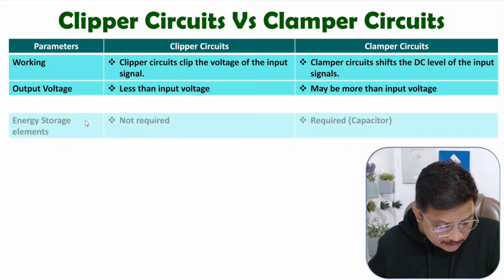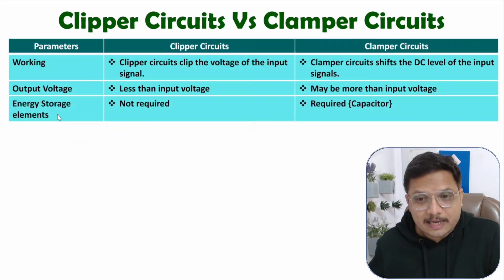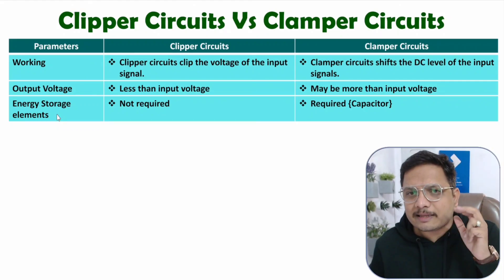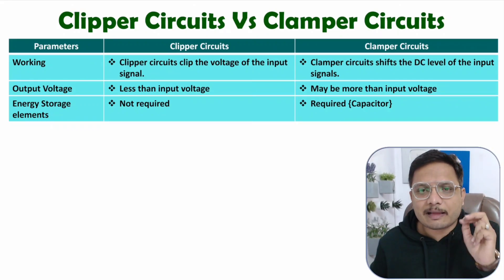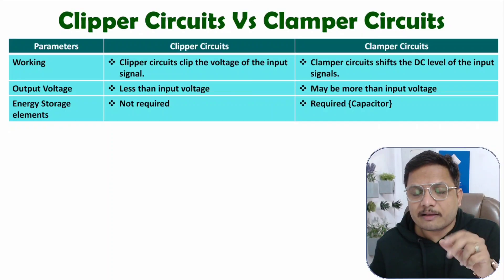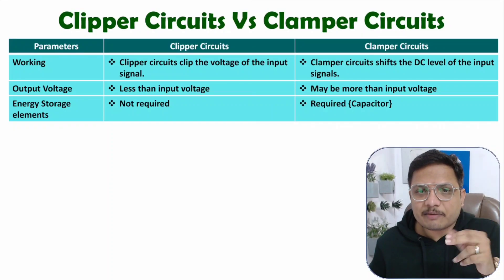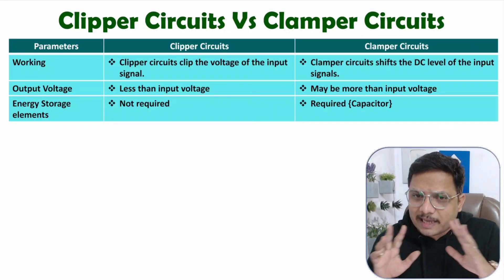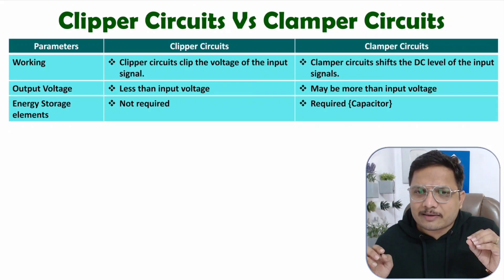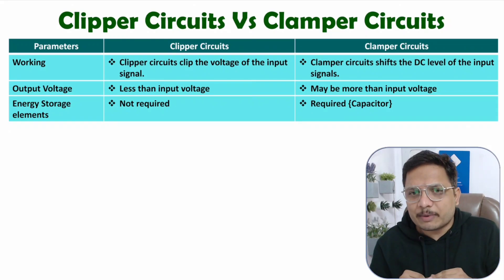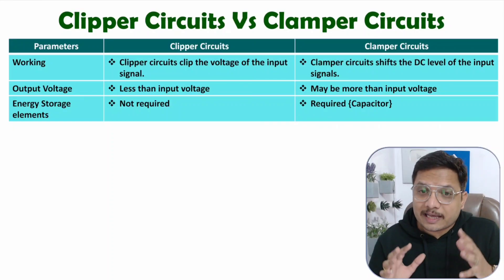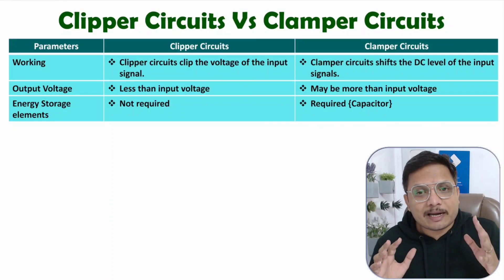The third parameter is the energy storage element. When it comes to energy storage elements, we use them in clamper circuits — specifically, we use a capacitor. With a clipper circuit, we don't use any energy storage element; we are just using diodes and resistors only. With a clamper circuit, we use an energy storage element like a capacitor.